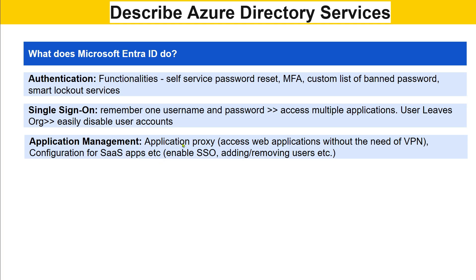There is something called application proxy. Many applications are confidential and specifically made for a company, so only employees of that organization should access them — many times you might have to use a VPN. Using the application proxy, you can access the web application without the need of a VPN. Those things can also be enabled through Entra ID.